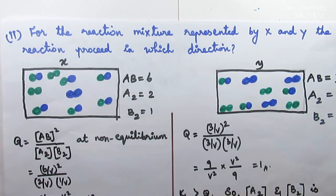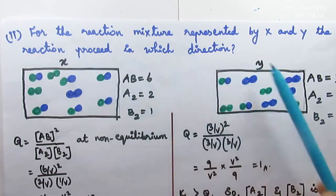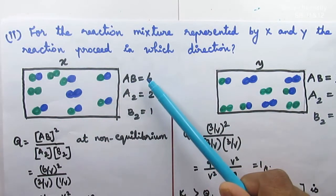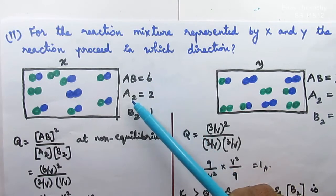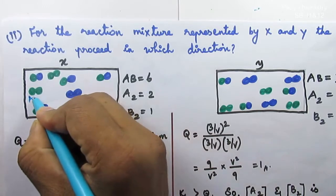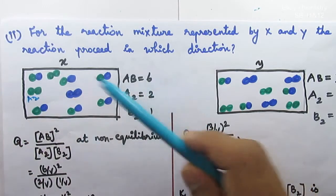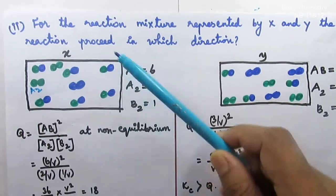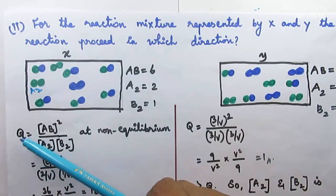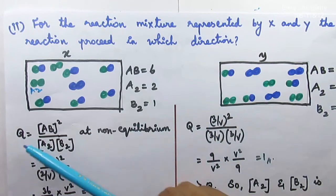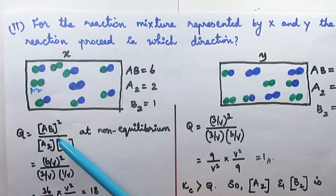From the picture, A₂ is 3 and B₂ is 3. Now, using the equation, Q equals concentration of AB squared divided by concentration of A₂ times concentration of B₂. This Q is the non-equilibrium condition reaction quotient — that is what we need to understand. Q is the non-equilibrium condition.